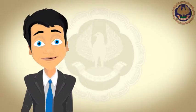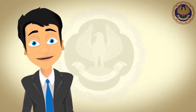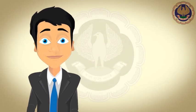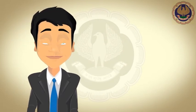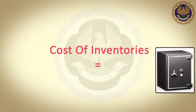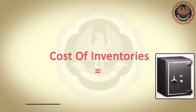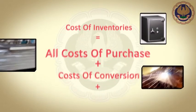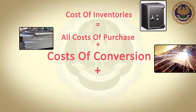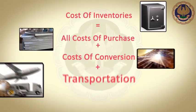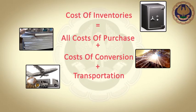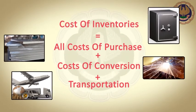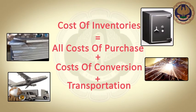In the next few minutes, let us understand how to arrive at the cost of inventories and net realizable value of inventory. Cost of inventories is equal to all costs of purchase, plus cost of conversion, plus other costs incurred in bringing the inventories to its current location and condition.